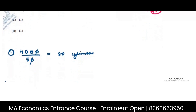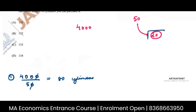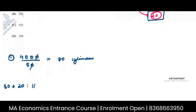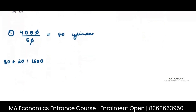I returned those 80 cylinders and got 20 per cylinder back, so I got 1600 rupees. I used these 1600 rupees again to buy cylinders and was able to buy 32 cylinders.